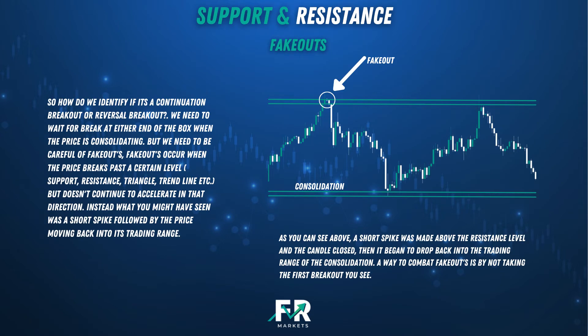So how do we identify if it's a continuation breakout or a reversal breakout? We need to wait for a break at either end of the box when the price is consolidating. But we need to be careful of fakeouts. Fakeouts occur when the price breaks past a certain level but doesn't continue to accelerate in that direction. Instead, you might see a short spike followed by the price moving back into its trading range. A short spike was made above the resistance level and then it began to drop back into the trading range of the consolidation.